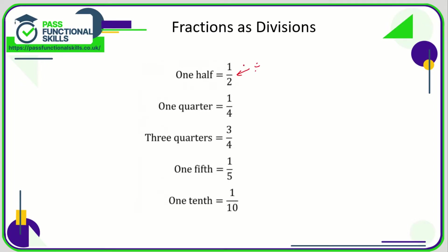We can work out what one half is as a decimal by typing into our calculators one divided by two, and one divided by two is 0.5. One quarter is one over four, which means one divided by four, and one divided by four is 0.25.